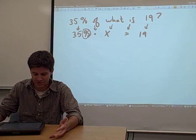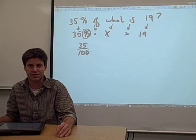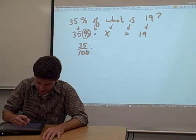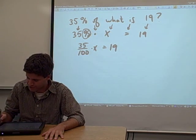Anytime you see a percentage sign, you take what's in front of it and throw it on top of 100. 35% is the same as 35 over 100, multiplied by x equals 19. We just solve for x, and we're finished.